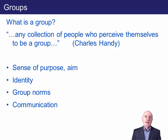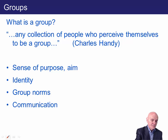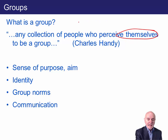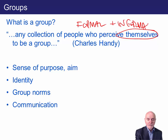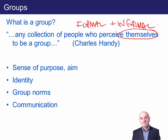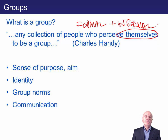Handy has a nice, simple definition of a group: any collection of people who perceive themselves to be a group. This is quite nice because the idea of perceiving yourself to be a group allows for both formal and informal groups. If you perceive yourself to be a member of a group with other people, then there is a group. Handy said that a characteristic of a group is that they will have a sense of purpose or an aim.